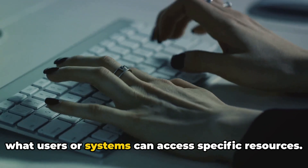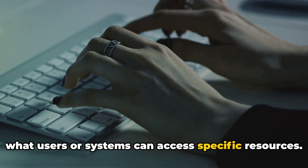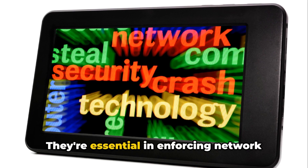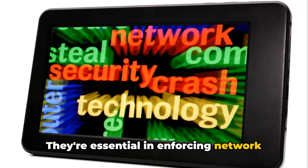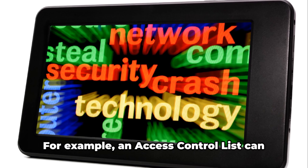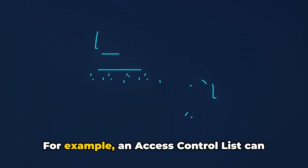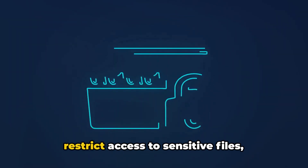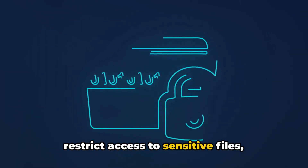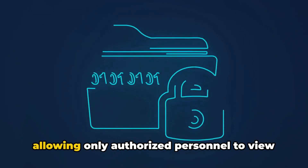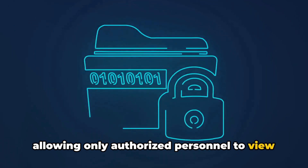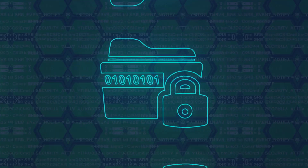Access control lists are used to control what users or systems can access specific resources. They're essential in enforcing network security policies. For example, an access control list can restrict access to sensitive files, allowing only authorized personnel to view or edit them.